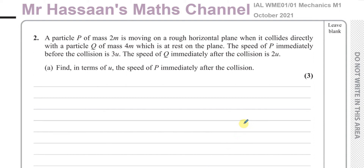Welcome back, this is Mr. Hassan's Maths channel. This is question number two from the Mechanics M1 October 2021 International A-Level Edexcel paper. There is a particle P of mass 2m moving on a rough horizontal plane when it collides directly with particle Q of mass 4m, which is at rest on the plane. The speed of P immediately before the collision is 3u, and the speed of Q immediately after the collision is 2u.